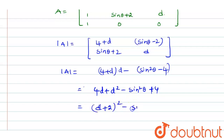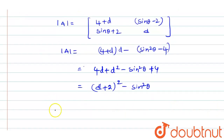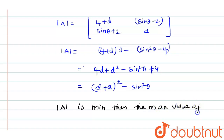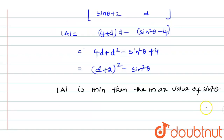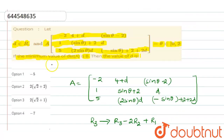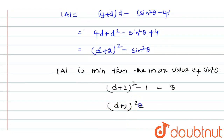We can see that |A| is minimum when sine squared θ is maximum. Rewriting: D squared plus 4D plus 4 minus sine squared θ equals (D plus 2) whole squared minus sine squared θ. The maximum value of sine squared θ is 1, so the minimum of |A| equals (D plus 2) squared minus 1, which is given as 8. Therefore (D plus 2) squared equals 9, so D plus 2 equals plus or minus 3.